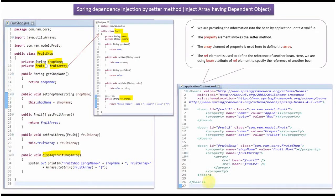This is the Spring configuration file. Here we have mentioned that fruit one object, fruit two object, and fruit shop object should be created by Spring container using Spring dependency injection by setter method. The property element invokes the setter method. Fruit one object's name will be set as apple and color as red, and fruit two object's name will be set as grapes and color as violet, by calling the setter methods via Spring container.